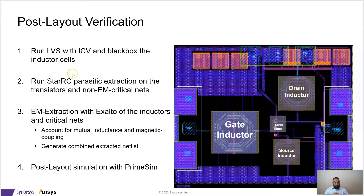Another option is to retain the contents of the black-box cell, only for calculating coupling between nets inside the black-box cell and any routing outside the cell. We then run parasitic extraction with StarRC on the transistors and all of the non-EM-critical nets. Next, as Kelly explained earlier, we invoke the Ansys Exalto tool, which will run extraction on all the EM-critical nets and components to account for mutual inductances and magnetic coupling. Exalto will then generate a combined extracted netlist, which we will use to run a simulation with PrimeSim.